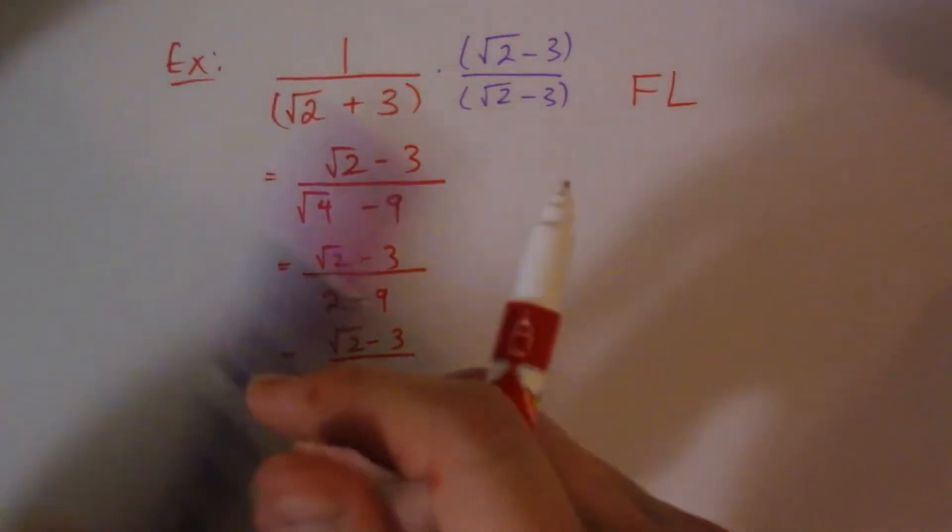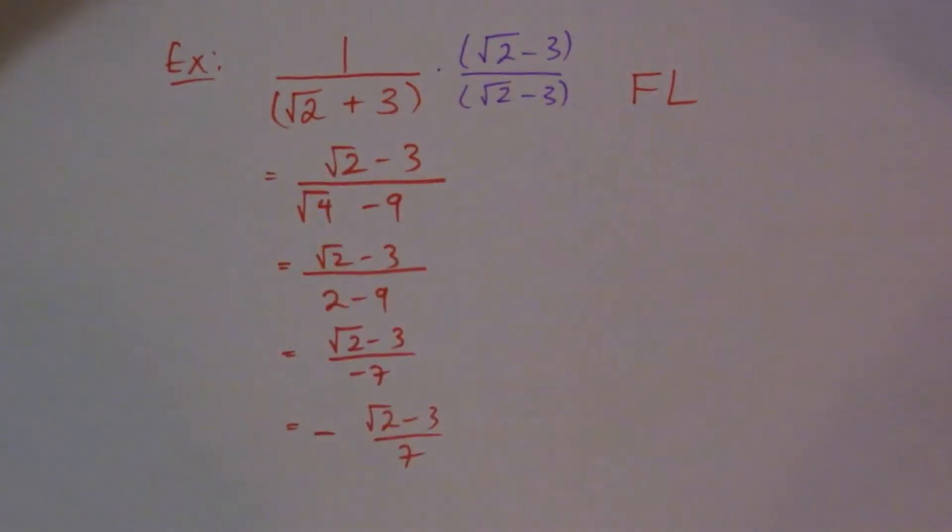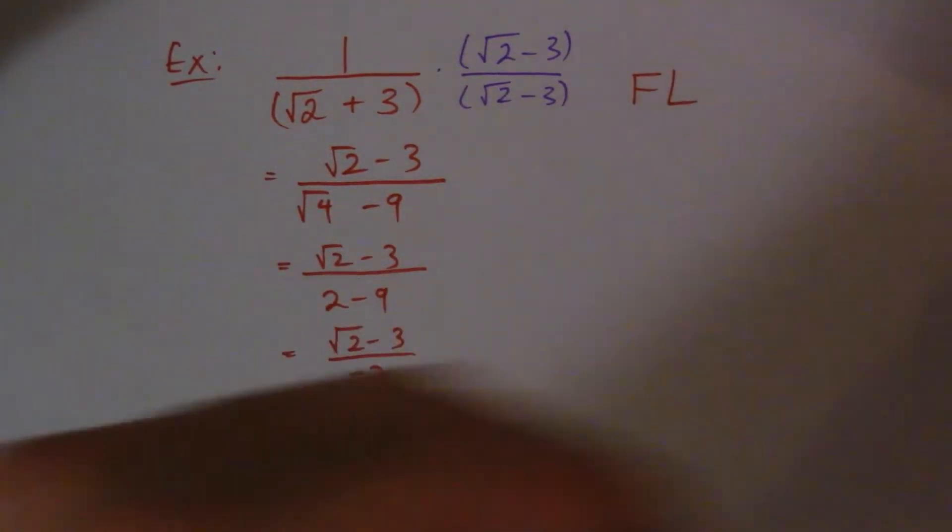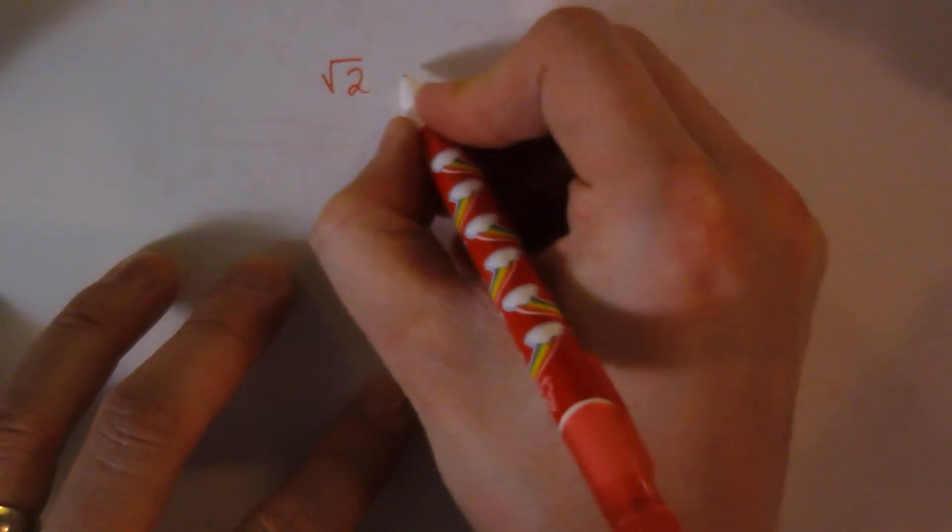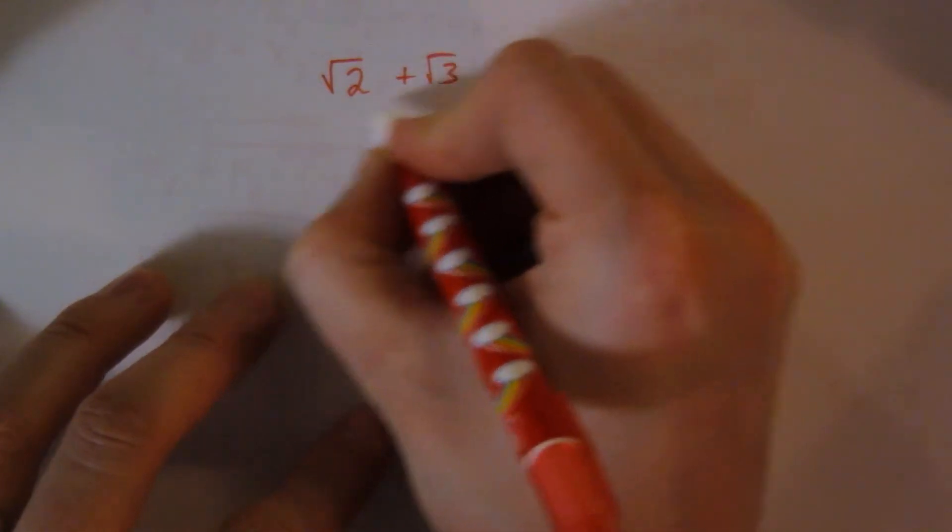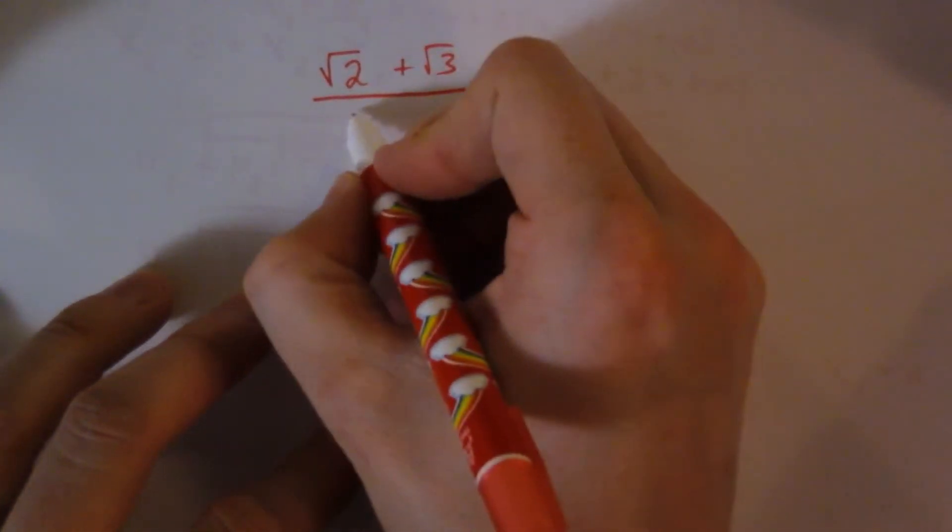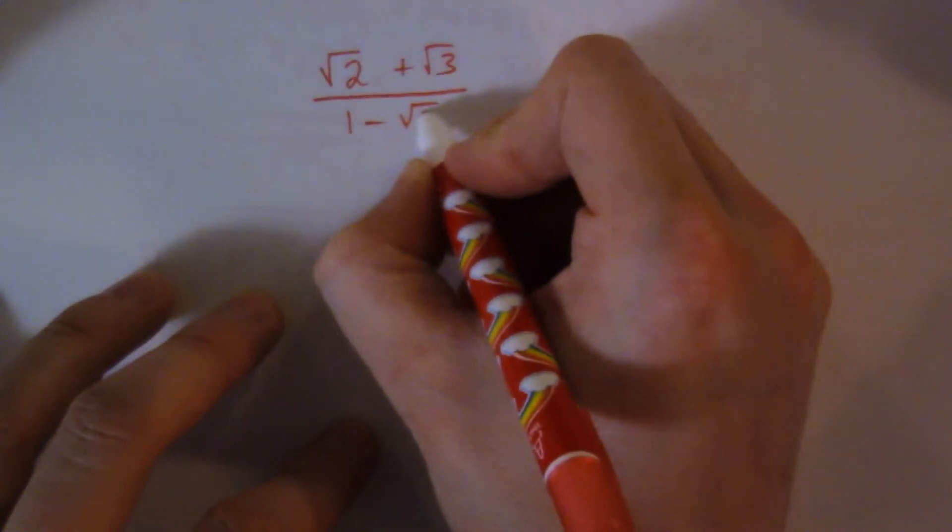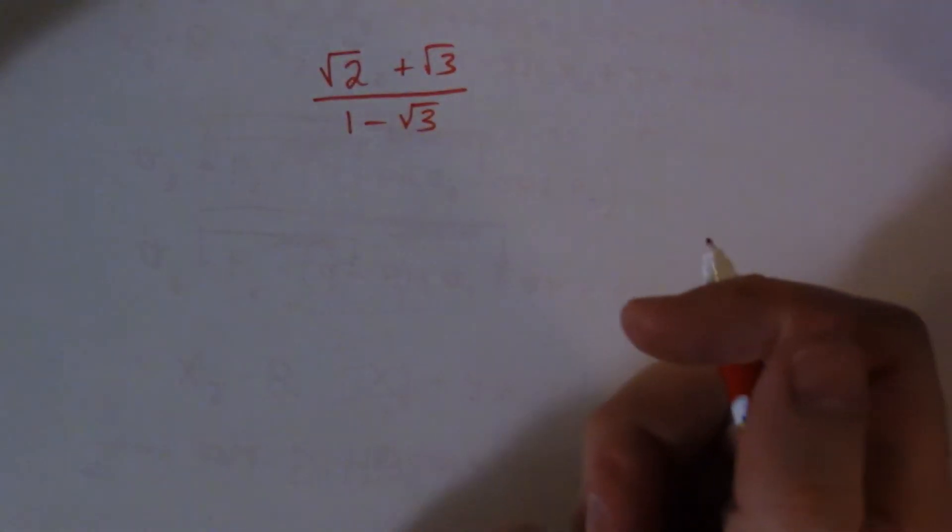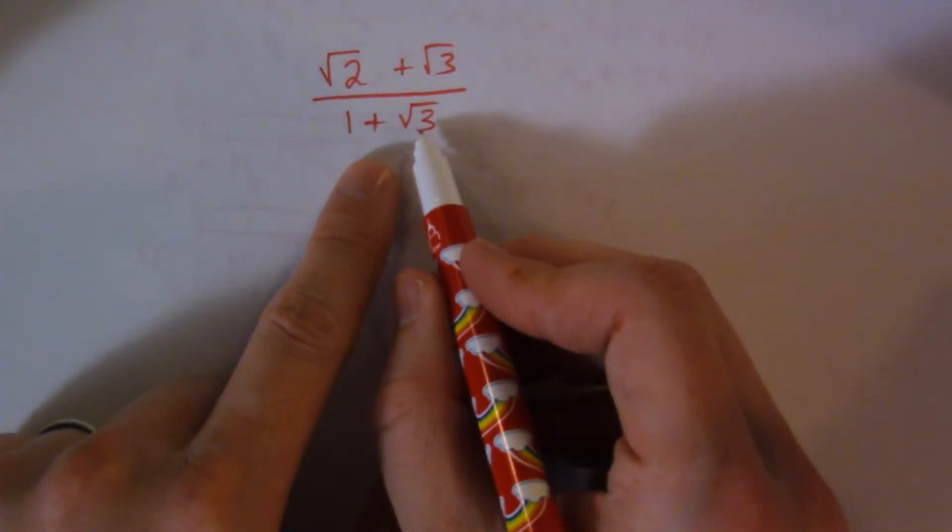Let's do another example since I didn't do very good with that one. Let me see, I've got another piece of paper here. Let's try this one. So let's do a slightly harder example. Let's do root 2 plus root 3 all over 1 minus root 3. So we have a situation like this again.